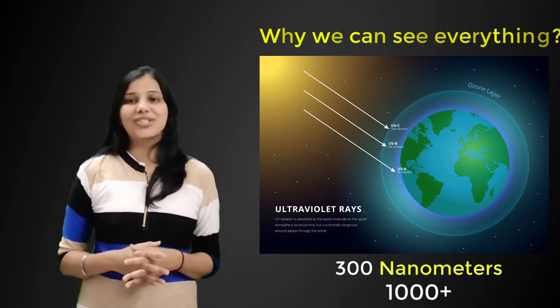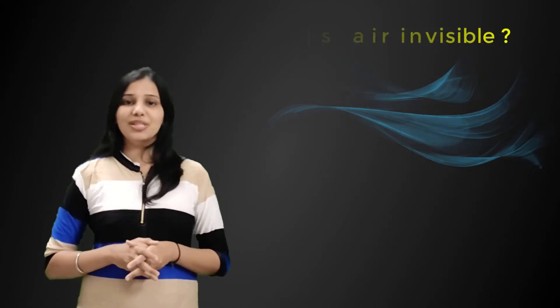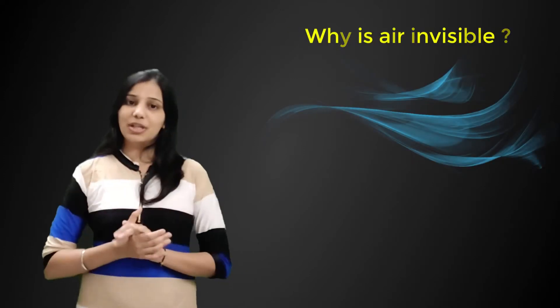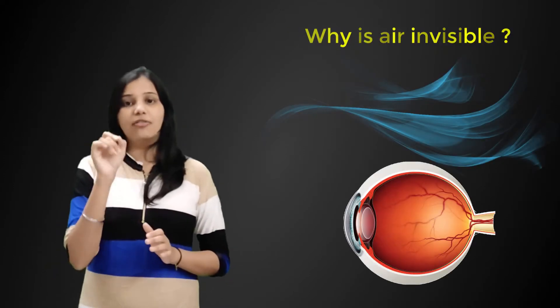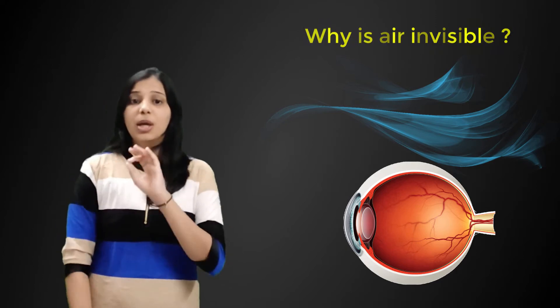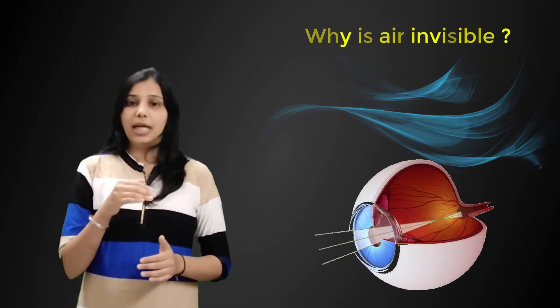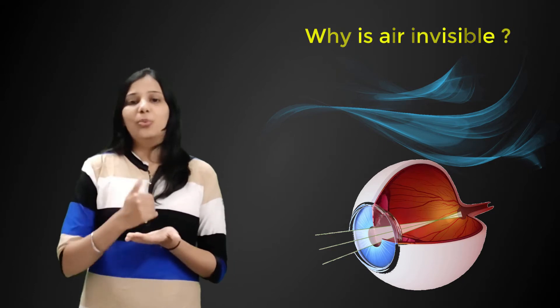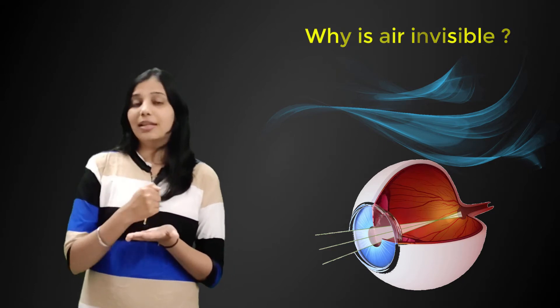So here is the question: why is air invisible? Air is transparent to our eyes because we have evolved retinas that are sensitive to the very wavelength of light that passes through it. Otherwise, we wouldn't be able to see anything at all.